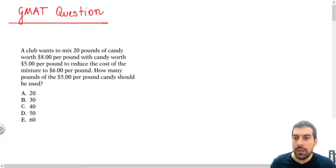In this question, the statement told us that a club wants to mix 20 pounds of candy worth $8 per pound with candy worth $5 per pound to reduce the cost of the mixture to $6 per pound. The question asks, how many pounds of the $5 per pound candy should be used?